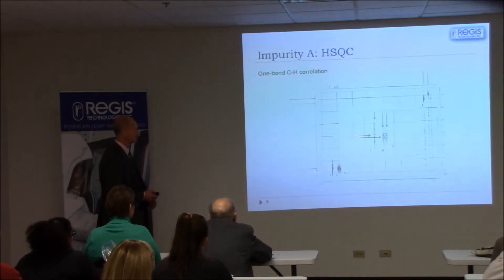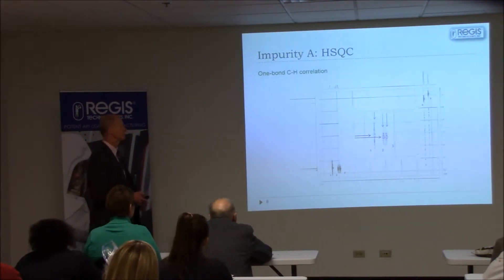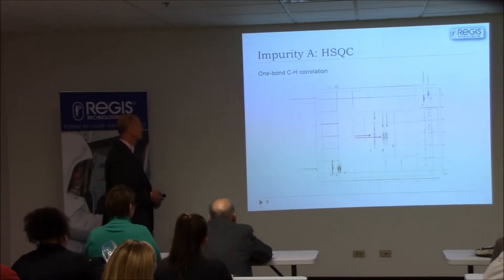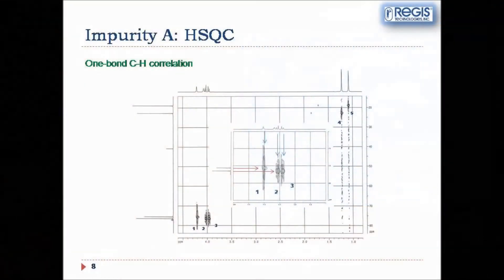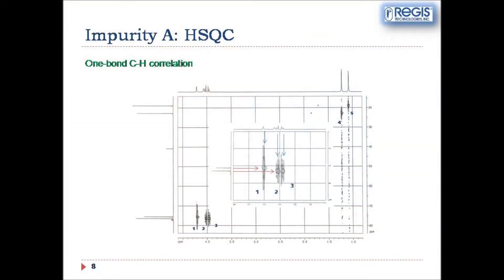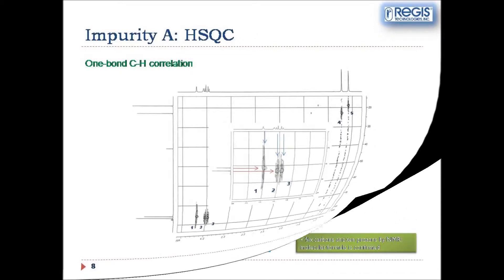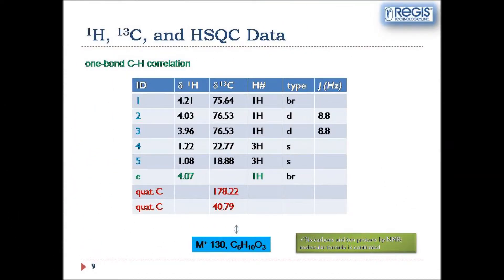HSQC two-dimensional spectra gives us much more information. We can directly correlate protons from the proton part to the carbons. Here, blue arrows show the direction from the protons to the particular resonances on the spectra which correlate to particular carbons. We then tabulate this data, and from the table we can see that we found all six carbons and six protons from the NMR.